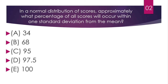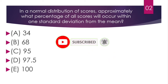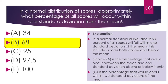Question number 2. In a normal distribution of scores, approximately what percentage of all scores will occur within one standard deviation from the mean? The correct answer is B. In a normal distribution curve, about 68% of all scores will fall within one standard deviation of the mean. This includes scores both above and below the mean. Choice A is the percentage that would occur between the mean and one standard deviation above or below it only. Choice C is the percentage that would occur within two standard deviations of the mean. Choices D and E are incorrect.